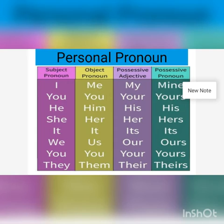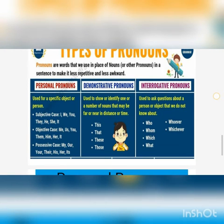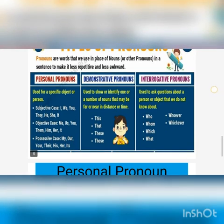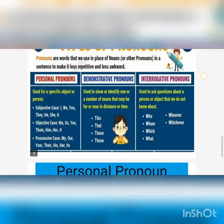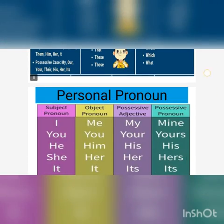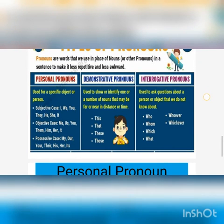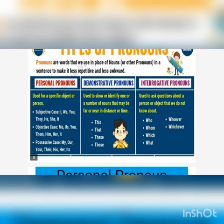So remember, personal pronouns are of three kinds: subjective, objective, and possessive. All the words given in this table are personal pronouns. Demonstrative pronouns and interrogative pronouns we will see in the next class.